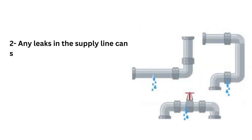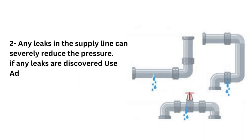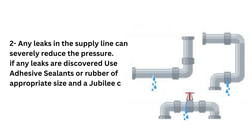Number two. Any leaks in the supply line can severely reduce the pressure. If any leaks are discovered, use adhesive sealants or rubber of appropriate size and a jubilee clip to secure the pipe.